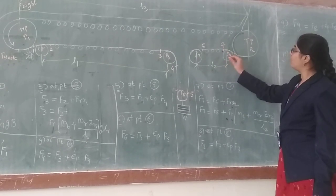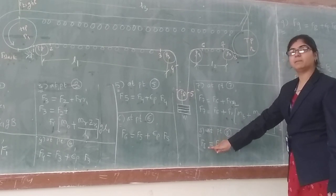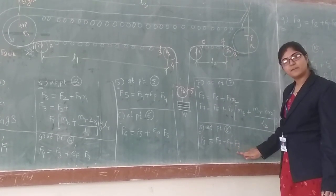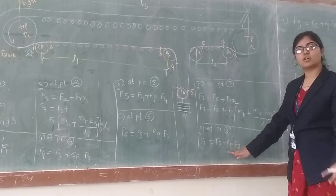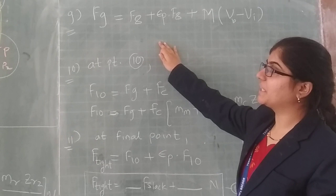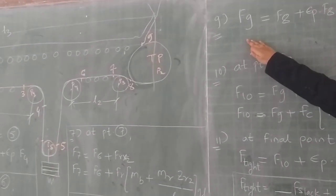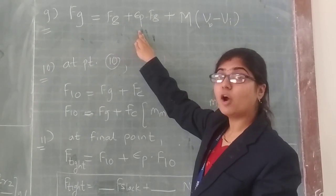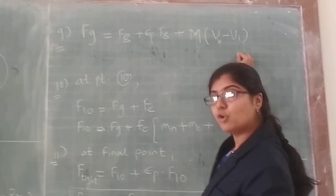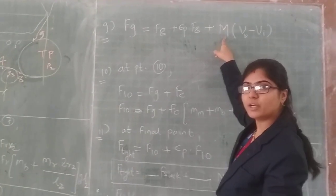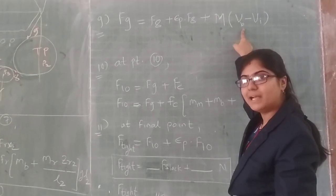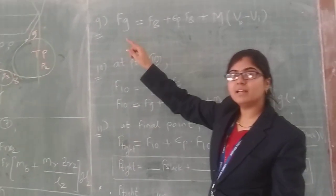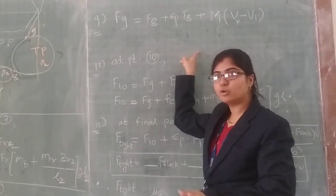After point seven, you will take point eight after the tail pulley. F8 will be equal to F7 plus the frictional resistance due to the tail pulley. Also, the frictional resistance at the loading point will be included. F9 equals F8 plus the frictional resistance offered due to the tail pulley plus the frictional resistance at the loading point. The loading point resistance involves mass flow rate in kg/s, vb (velocity of the belt), and vr (initial velocity of the material dropping from the hopper). You will get F9 in terms of F-slack, because right now you don't know F-slack.